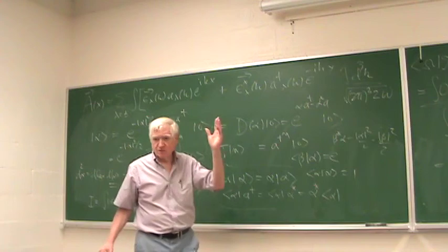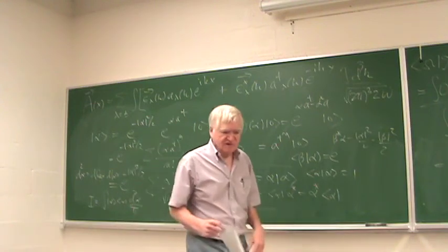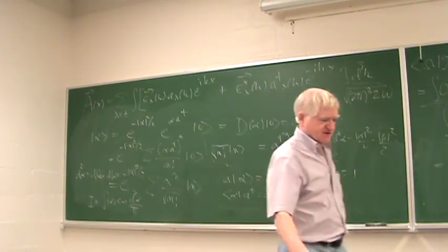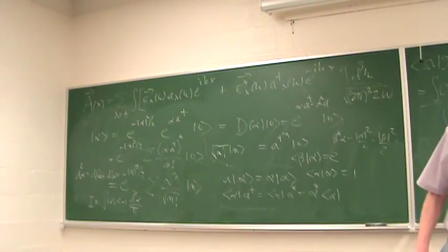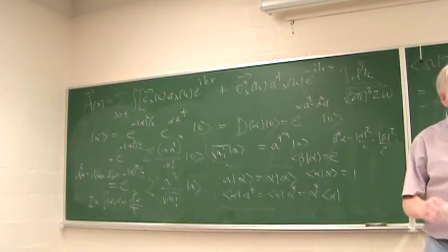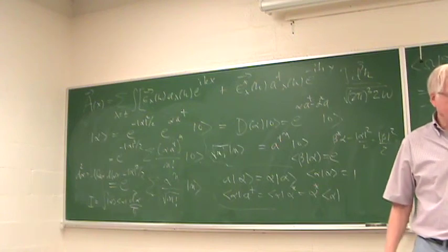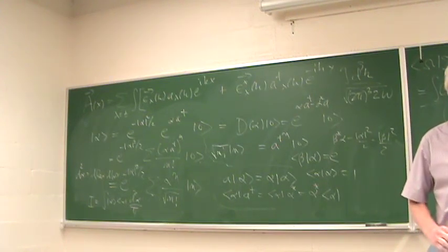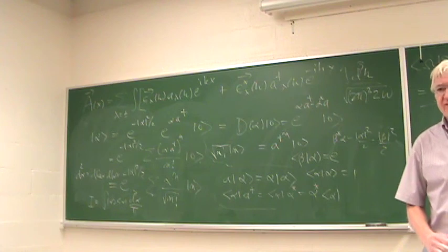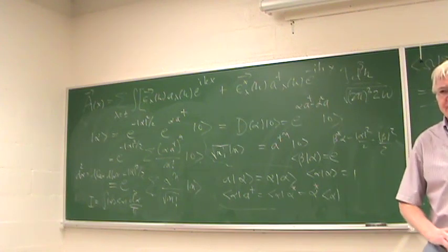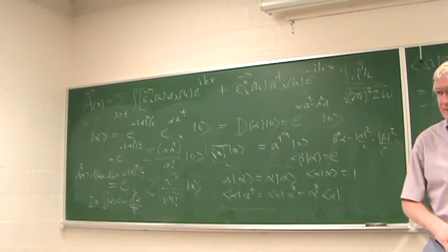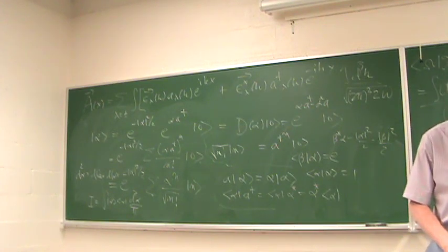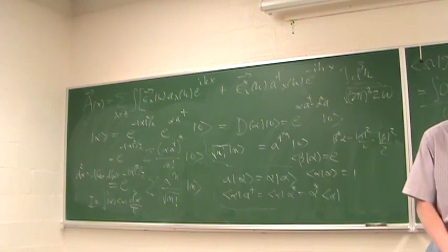So that'll be four homework problems total: three on coherent states — showing the eigenstate property, the completeness relation, and the inner product formula — and one on showing that the electromagnetic field is transverse. I'm going to race home to try to get there before the debate starts. Student: Are you going to post the homework problems? Yes, yes.